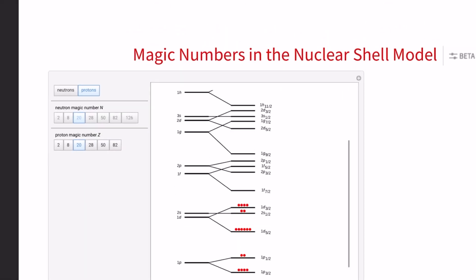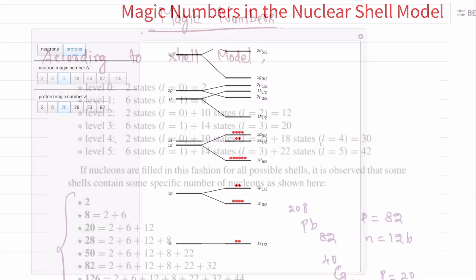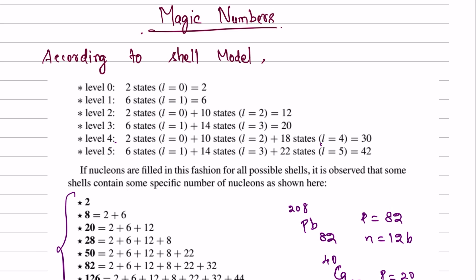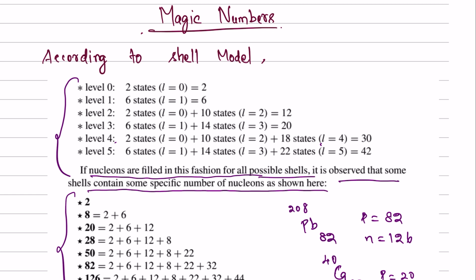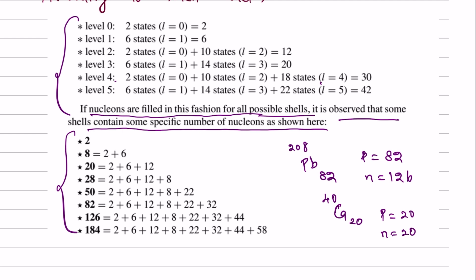The second place of neutron is also doubly stable. This is the same as double stable. In the nuclear shell model, we are going to see the demonstration of neutrons and protons. If you look at level 0 to 5, you can see the neutrons and protons are filled. If the nucleons are filled in this fashion for all possible shells, then you can fill the nucleons. It is observed that some shells contain specific numbers of nucleons. If you look at the numbers 2, 8, 20, 28, you can see the nucleus is stable.